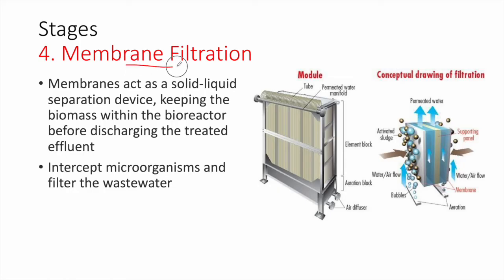Next, we have the membrane filtration. If we are using modules, a module is submerged into the wastewater with air diffusion. The membrane filtration requires aerobic conditions. Water enters through these membranes and we get clean water — what we call permeate — along with the formation of activated sludge. This happens in aerobic conditions through aeration, which has two objectives: to create aerobic conditions and to clean the MBR sheets. The membranes act as a solid-liquid separation device, keeping the biomass within the bioreactor before discharging the treated effluent.